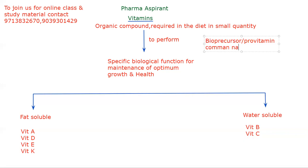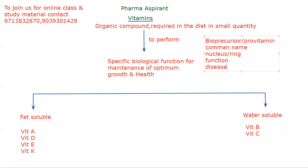Key exam points for vitamins: what is the common name, what is the chemical structure or ring present in the vitamin, what is the specific function — for example, Vitamin K is related to blood clotting — and what is the deficiency disease. These are the important points to remember, from which exam questions are asked.